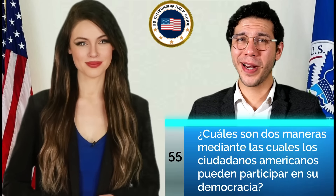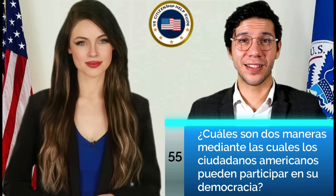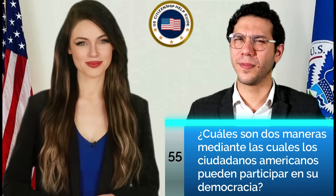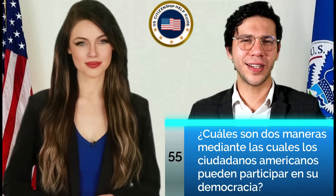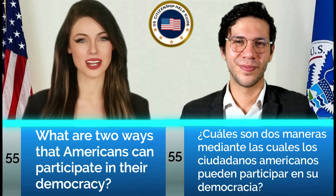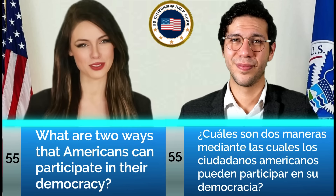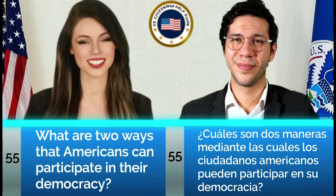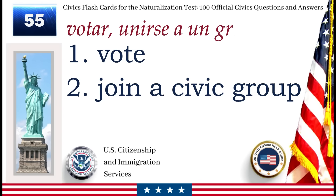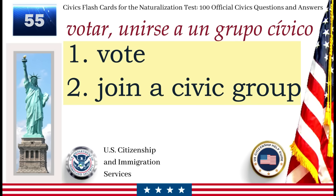¿Cuáles son dos maneras mediante las cuales los ciudadanos americanos pueden participar en su democracia? What are two ways that Americans can participate in their democracy? Votar. Unirse a un grupo cívico. Vote. Join a civic group.